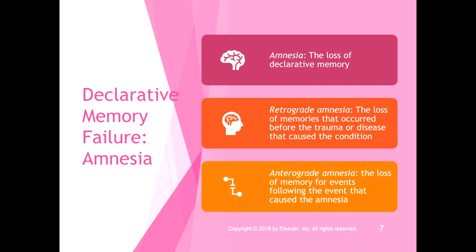The failure of declarative memory is called amnesia — the loss of declarative memory. Retrograde amnesia is the loss of memories that occurred before the trauma or disease that caused the condition. Anterograde amnesia is loss of memory for events following the event that caused the amnesia. Concussions or mild traumatic brain injuries can cause both types. People who had a concussion sometimes didn't remember events immediately around the trauma or the three to four days before it — the trauma interrupted the encoding process.